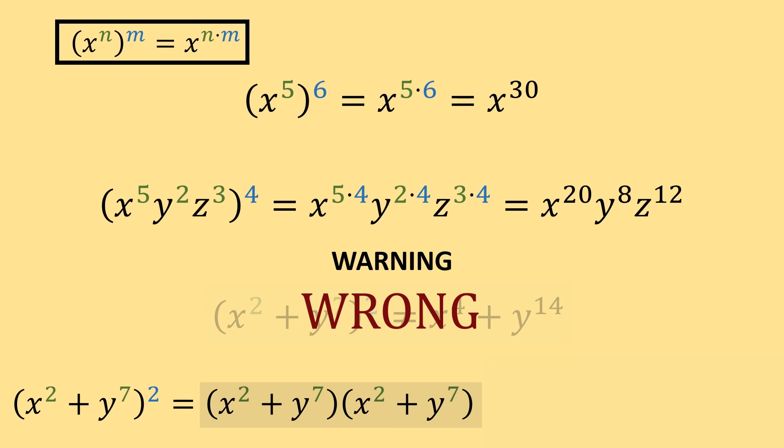Whenever you multiply two binomials together, you've been taught to use FOIL, and if you don't remember how to use FOIL, you could check out this video here. And if we use FOIL on this, we'd get x to the fourth power plus 2x squared y to the seventh plus y to the fourteenth. So just remember when you're using this rule that everything within the parentheses has to be multiplied together in order to use it properly.